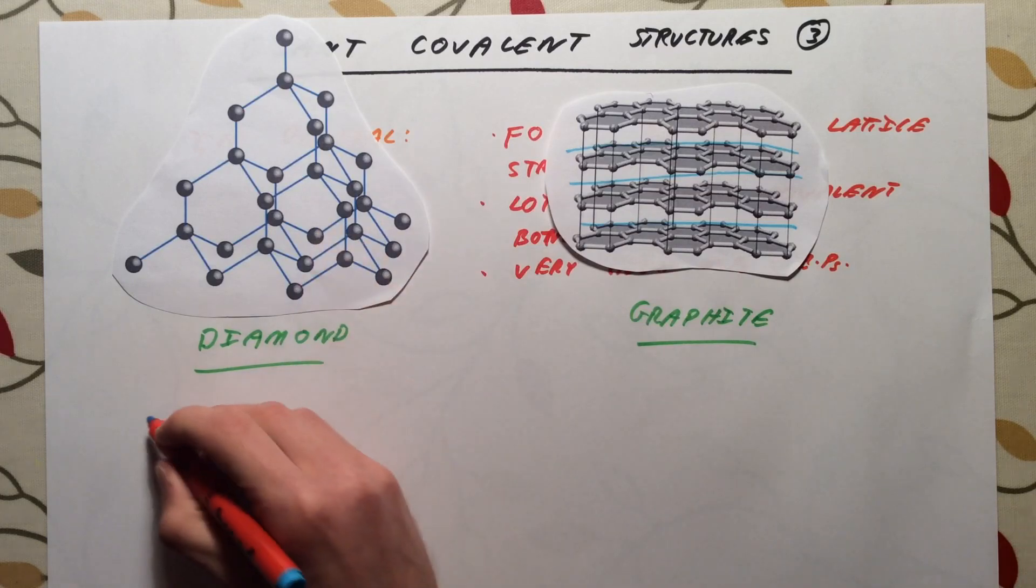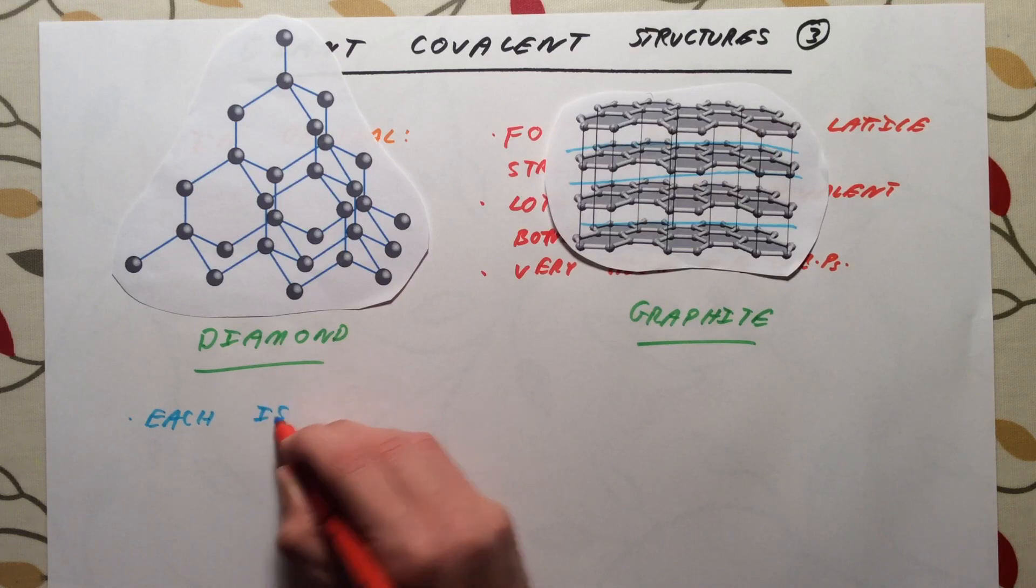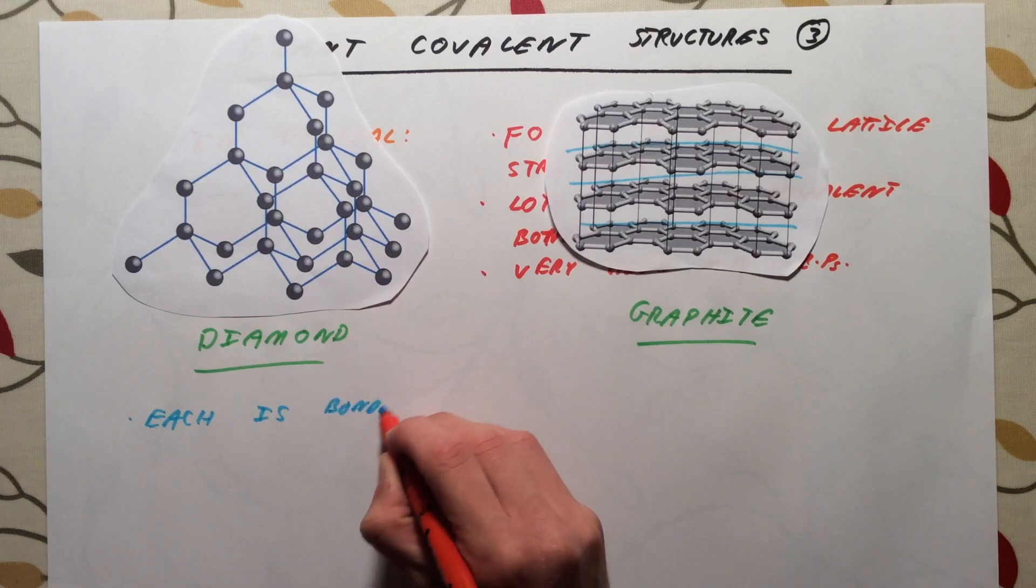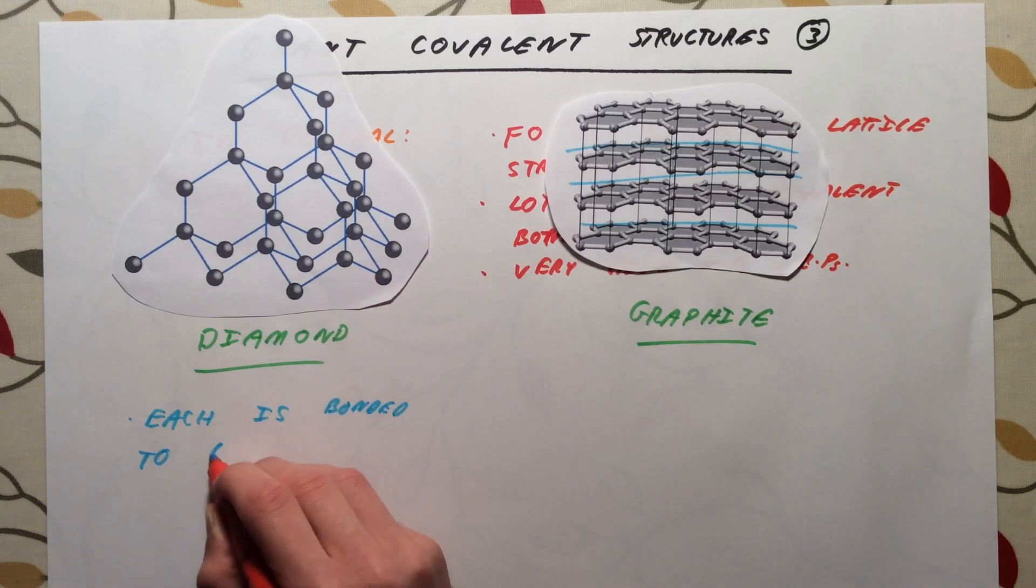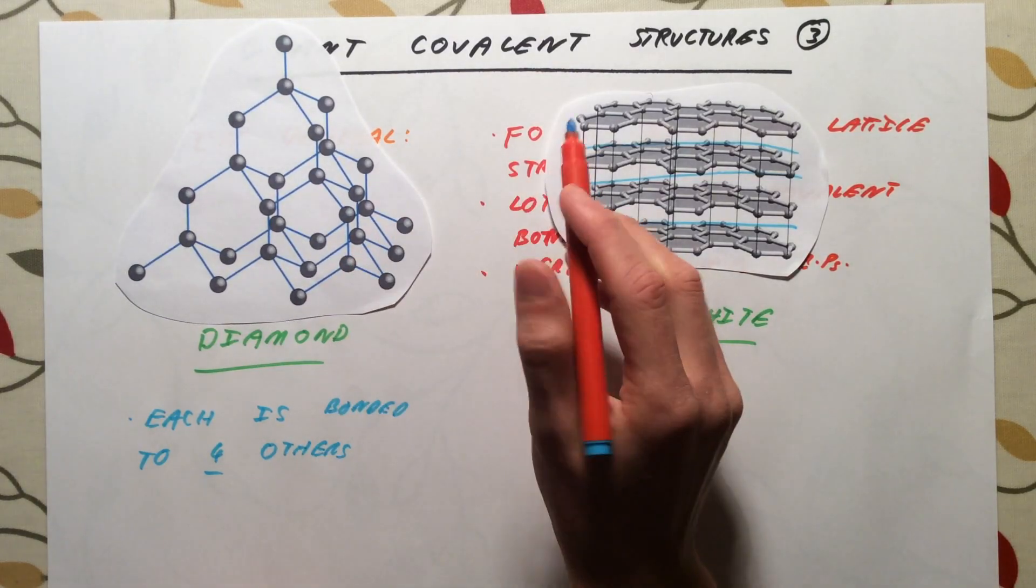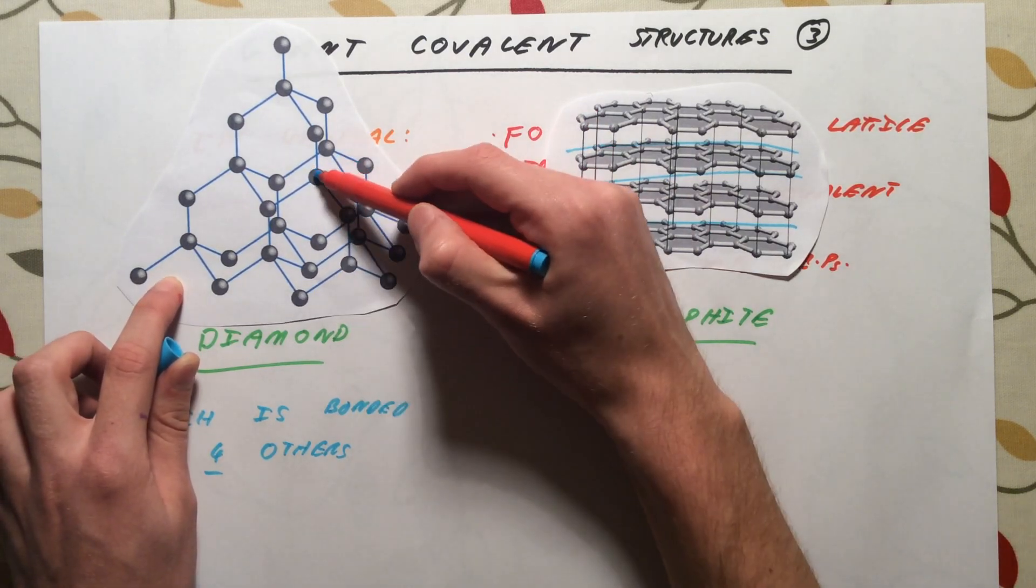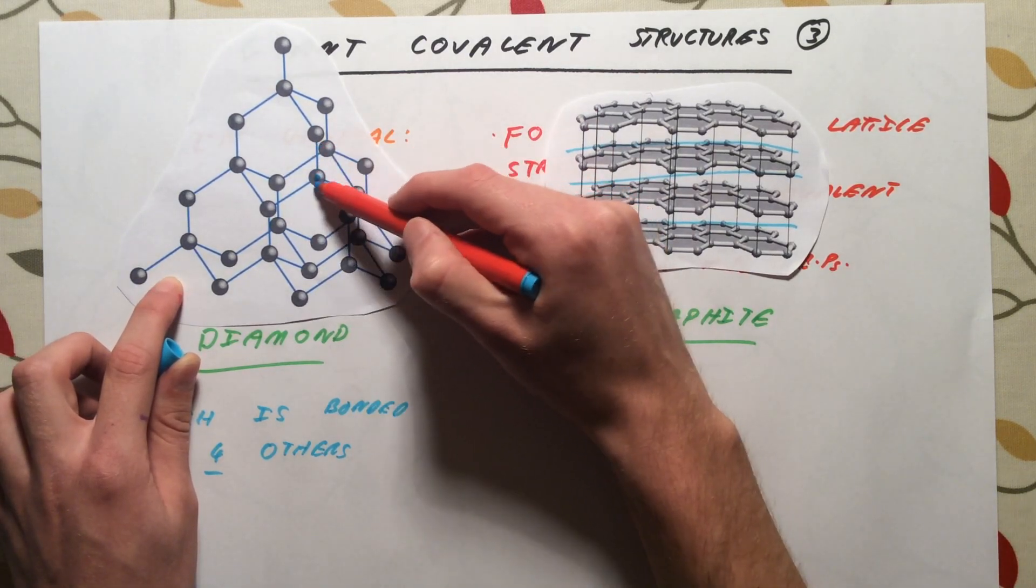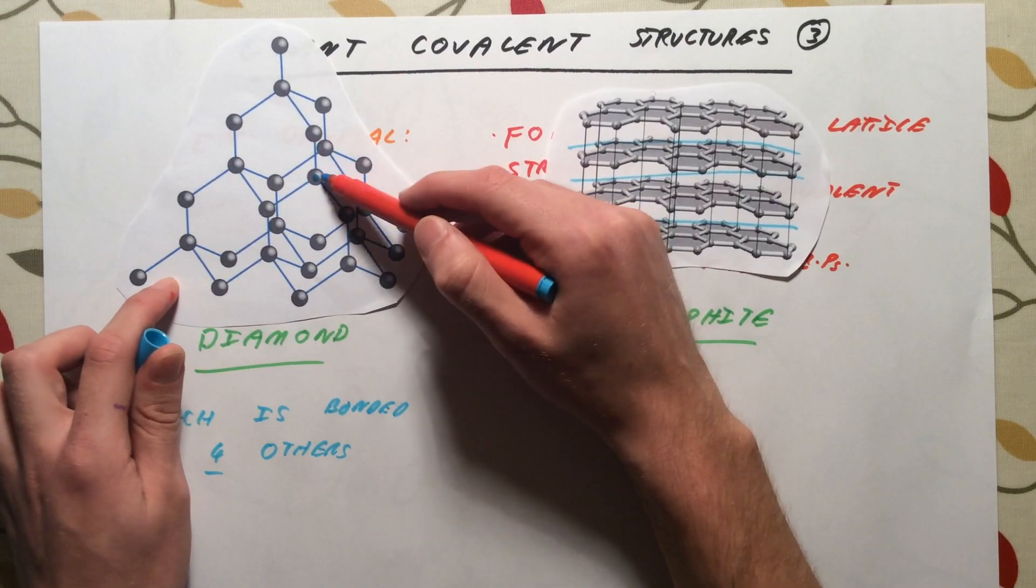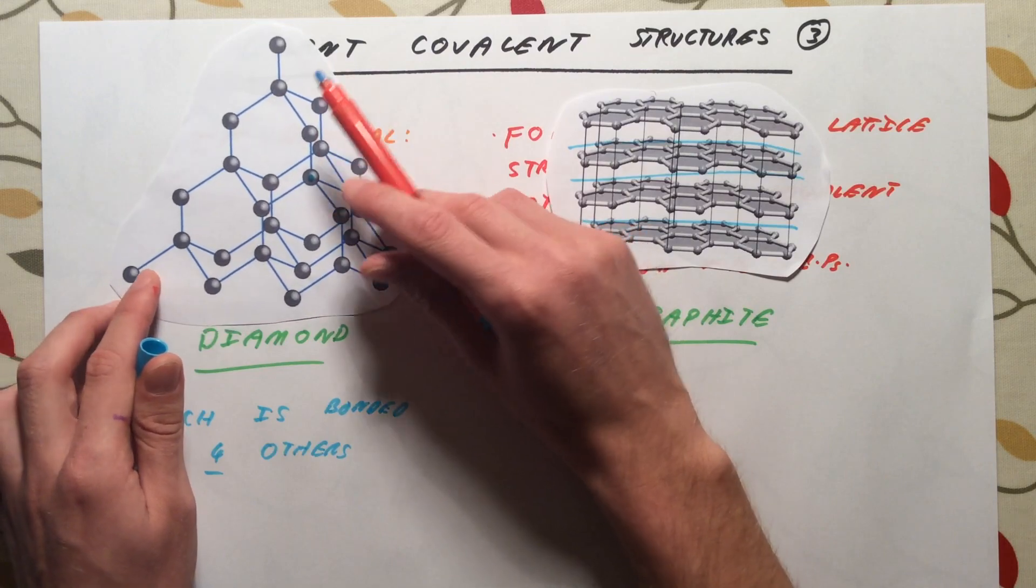In diamond, each carbon is bonded to four others. If we pick this carbon atom here, it's got one covalent bond, two, three, four. And actually any carbon atom in the structure will have four strong covalent bonds to other carbon atoms.